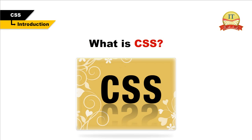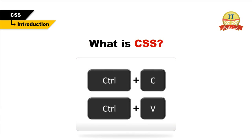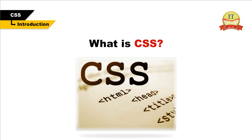For example, when we first learn HTML, we are taught to set the font face, size, color, styles, etc. Every time it occurs on a page, we find ourselves typing or copying and pasting the same thing over and over again. With CSS, you only have to specify these details once for any element, and CSS then automatically applies the specified styles whenever that element occurs on the page.